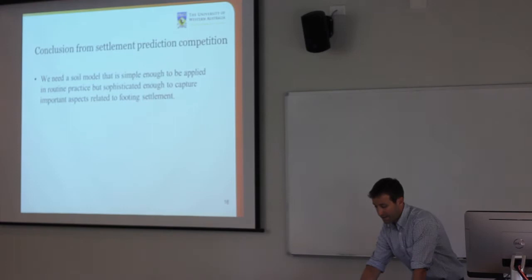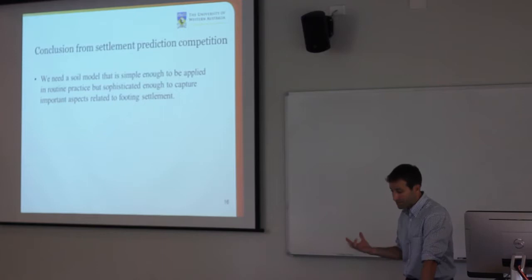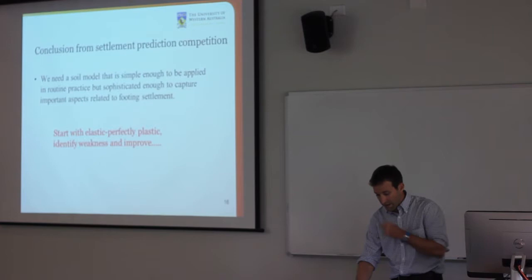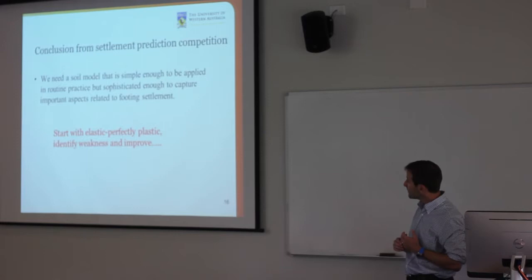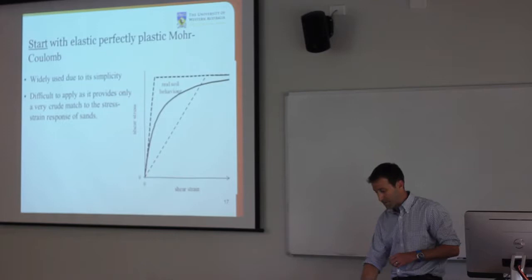Based on that, what we need are simple models that capture enough of the key features to give a realistic handle on what's happening, without being over-complicated or incorporating features that aren't important. So basically I'm going to start with an elastic perfectly plastic constitutive model, identify some weaknesses in terms of what real soil data tells us, and then talk about some of the enhancements that were made.